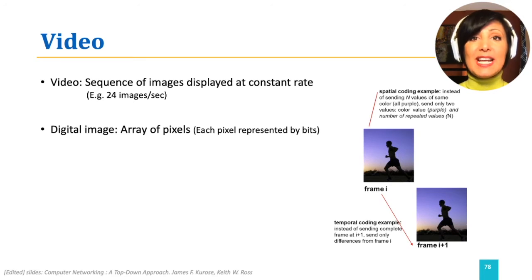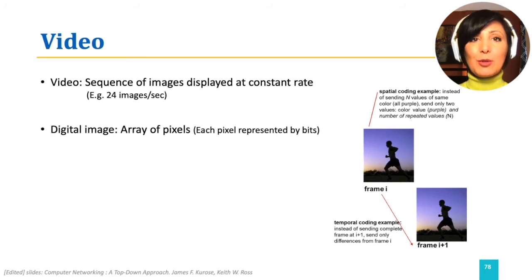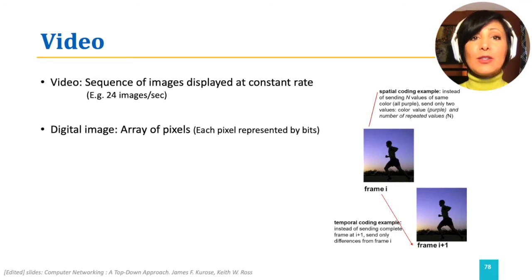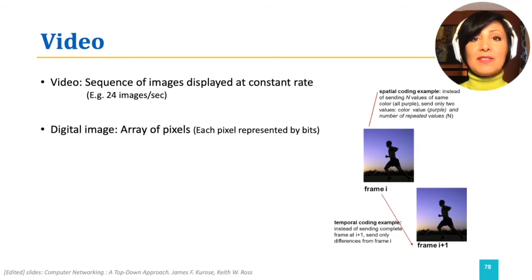A digital image is an array of pixels where each pixel is represented by bits defining its color and luminance. These images displayed to the user per second to compose a video could be coded in bits in different ways. Higher data rates usually mean better video quality and viewer experience.